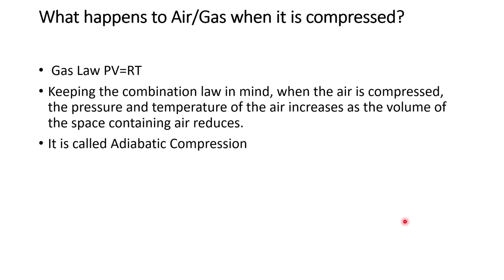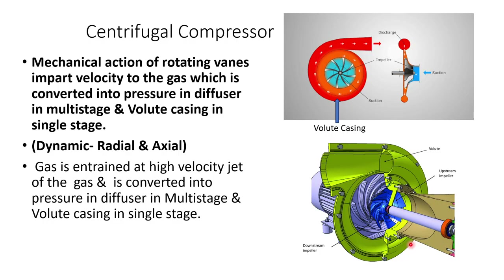Let us see what happens when the gas is compressed. Gas is compressed as per the ideal gas law which says PV is equal to RT, meaning pressure into volume is equal to R into temperature, where R is the universal gas constant. Keeping the compressor laws in mind, when the air is compressed, the pressure and temperature of the gas increases as the volume of the space containing the air reduces. This is called adiabatic compression.